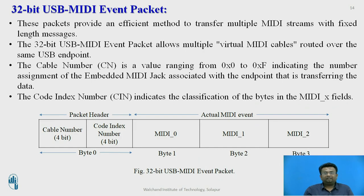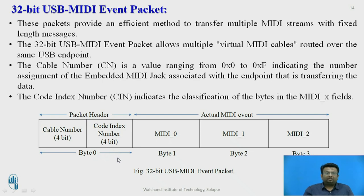This is a 32-bit MIDI event packet. The packet is 32 bits in size, consisting of 4 bytes, each byte of 8-bit length. It starts with the packet header, followed by 3 MIDI event data bytes. The packet header consists of a 4-bit cable number and a 4-bit code index number. The cable number is a value ranging from 0 to F, indicating the assigned number of the embedded mini-jack associated with the endpoint transferring the data. The code index number indicates the classification of the bytes in the MIDI fields.